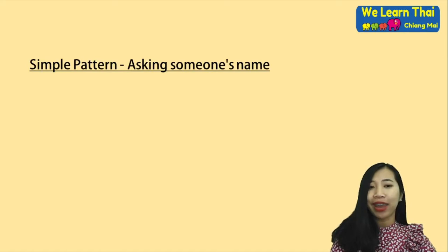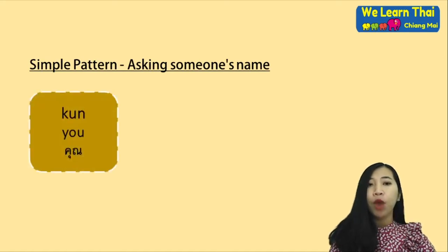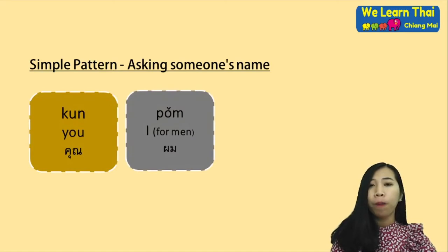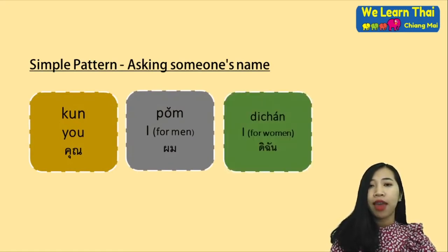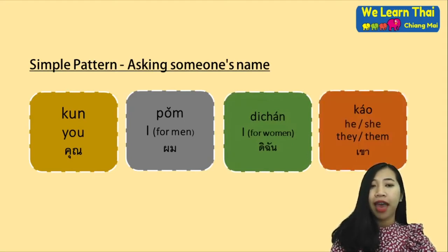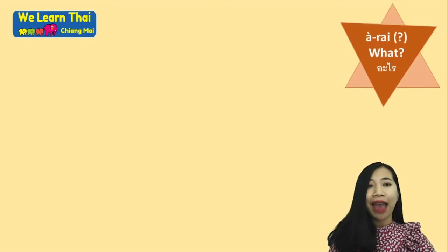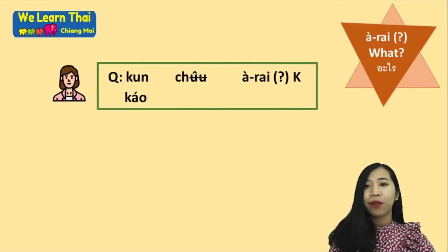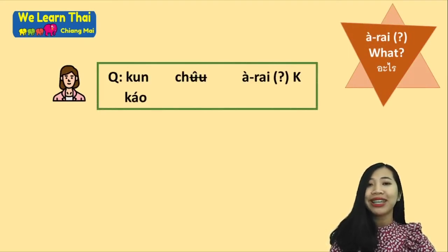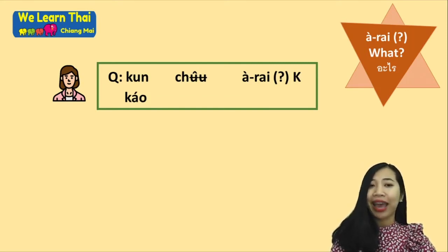For asking someone's name — the first one: 'khun' means 'you'. 'Phom' means 'I' for men. 'Di chan' means 'I' for women. And 'khao' means 'he', 'she', or 'they' — third person. The word 'arai' means 'what'. For example: 'Khun chuu arai kha?' — What is your name? Or: 'Khao chuu arai kha?' 'Di chan chuu Jane kha.'